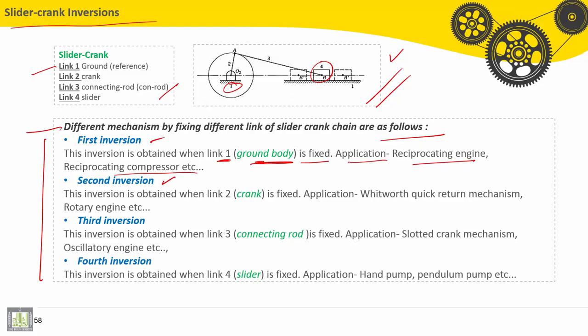Second inversion. This inversion is obtained when link number two, the crank, this is the crank. Link number two is grounded, is fixed. As an application: Whitworth quick return mechanism, rotary engine, etc.